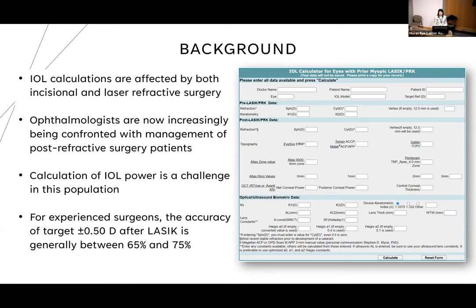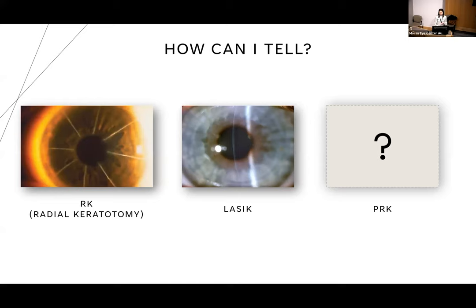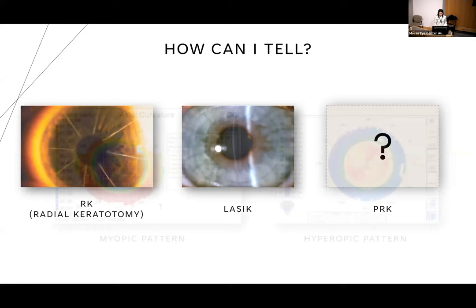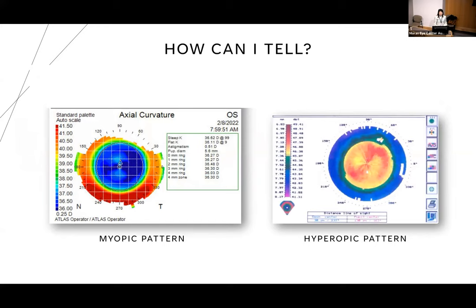How can you tell if someone has had prior refractive surgery? A slit lamp can help identify RK incisions and possibly a LASIK flap, but if someone has had PRK it's very difficult to tell. Topography is very helpful for seeing ablation patterns — it can help tell not just what type of surgery they had but what type of correction: myopic or hyperopic.